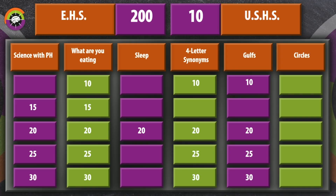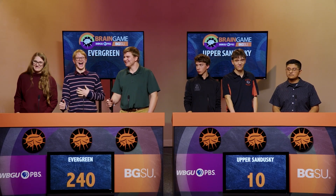Sleep for 20 points — double or nothing time. This condition may cause sufferers to fall asleep uncontrollably several times during the day. Evergreen buzzes in — Caleb answers 'narcolepsy,' which is correct. 'But if it happens to me, it's marcolepsy' — that's a little joke.